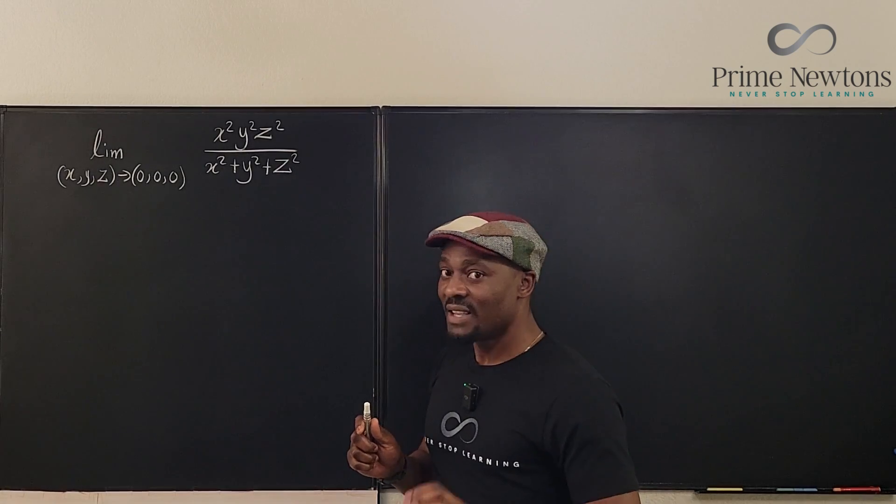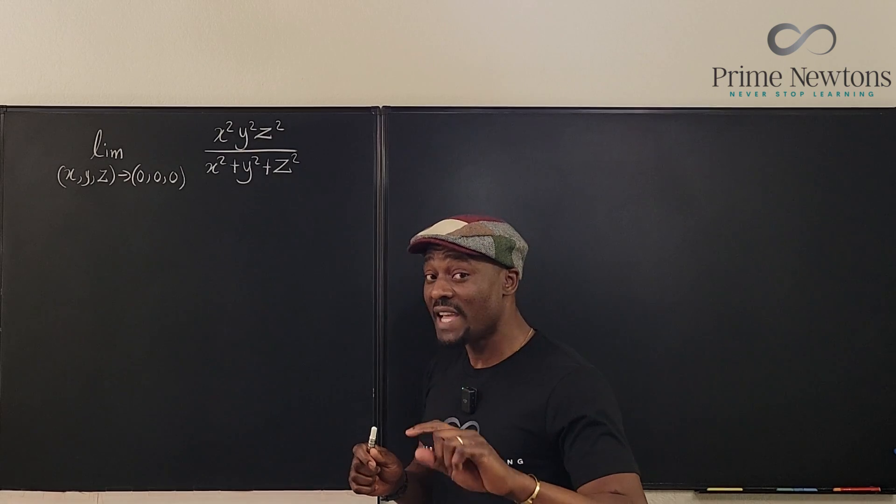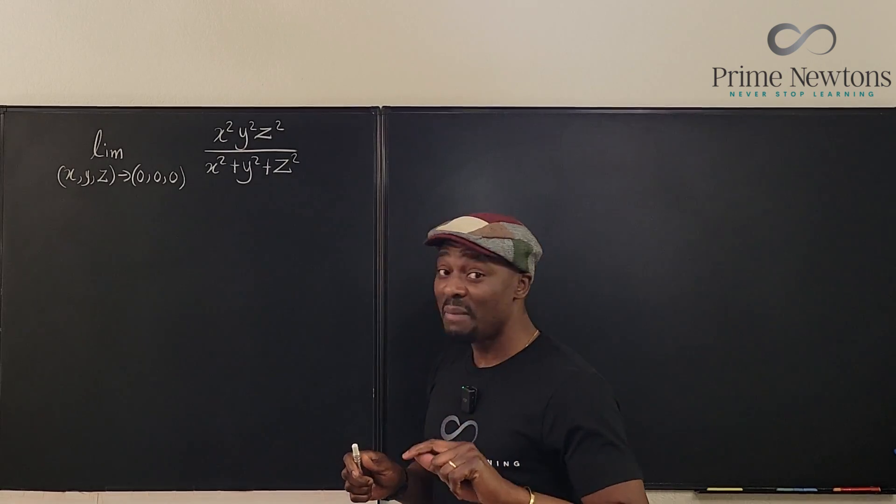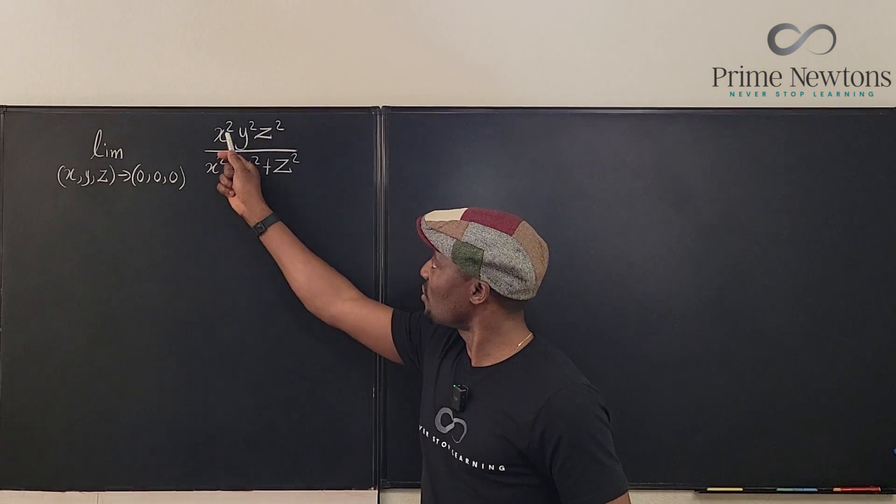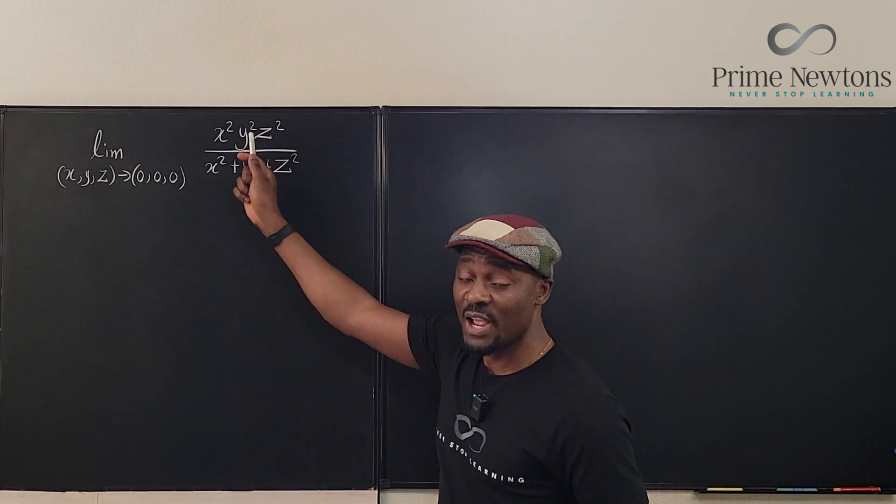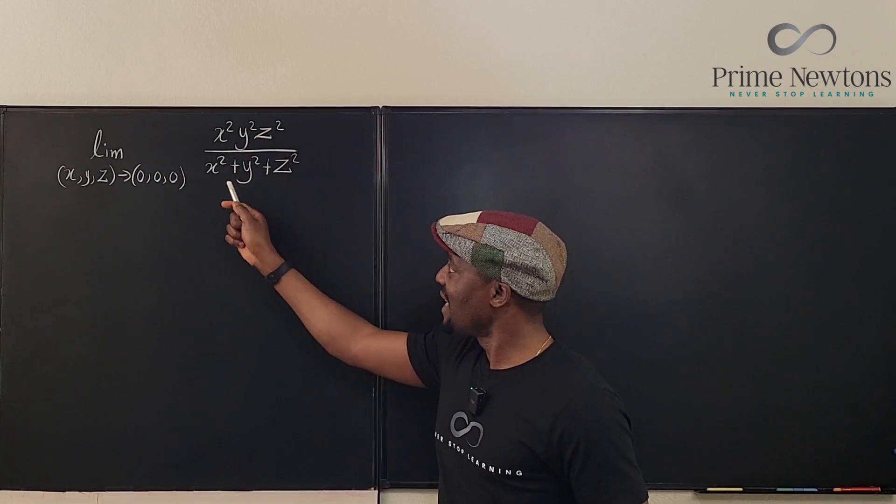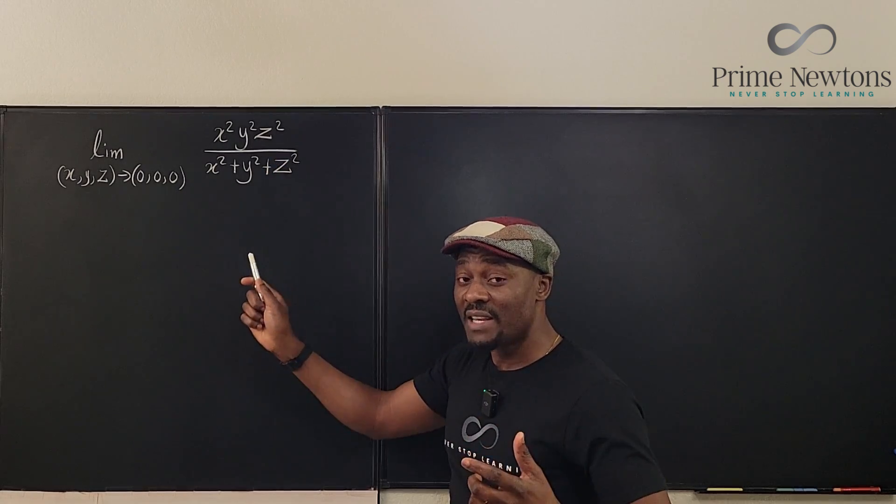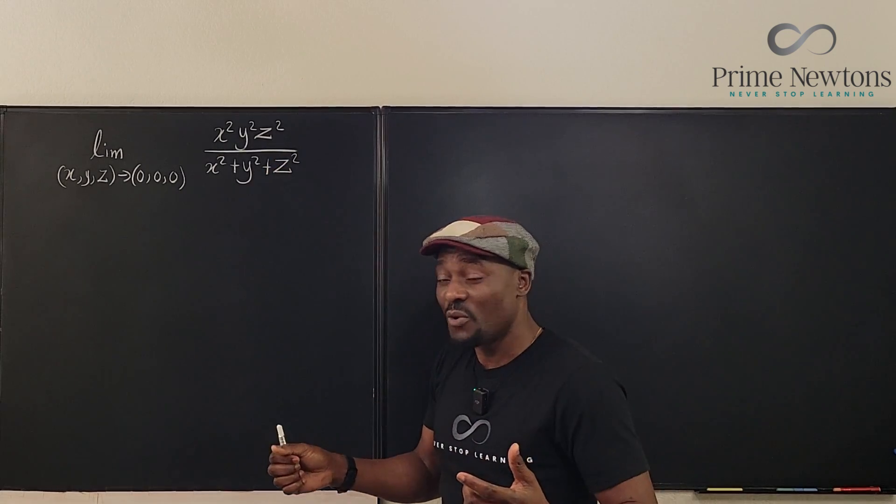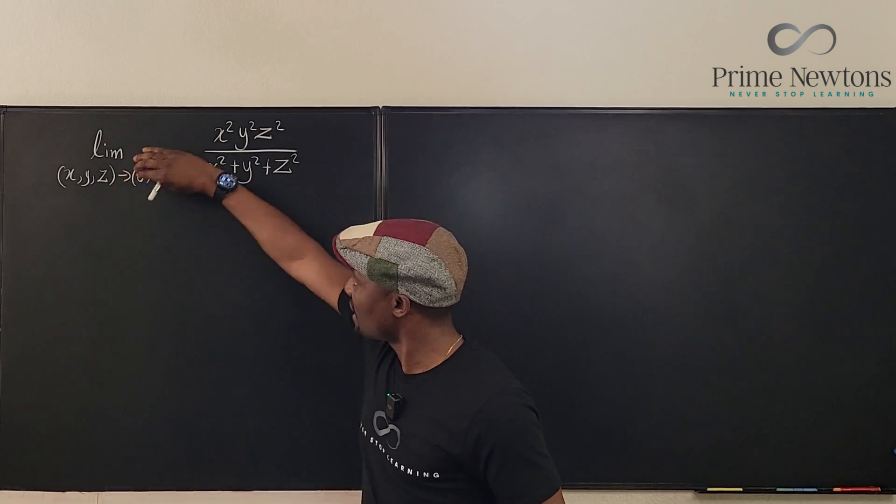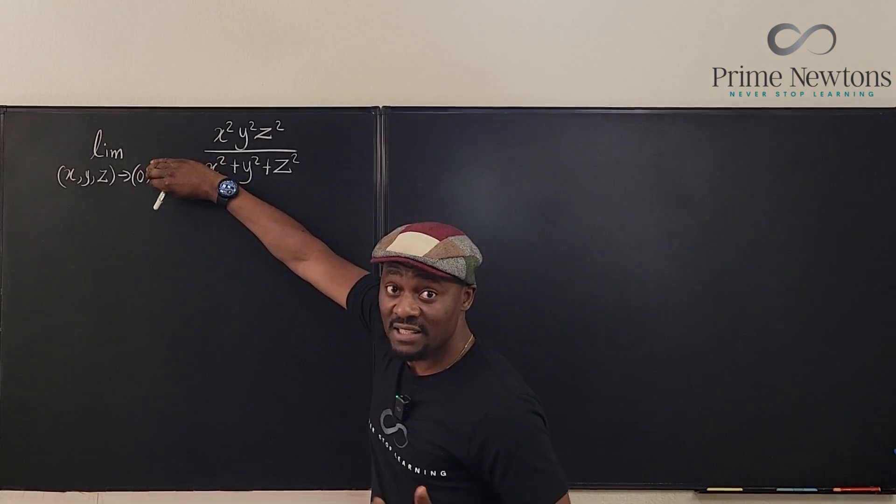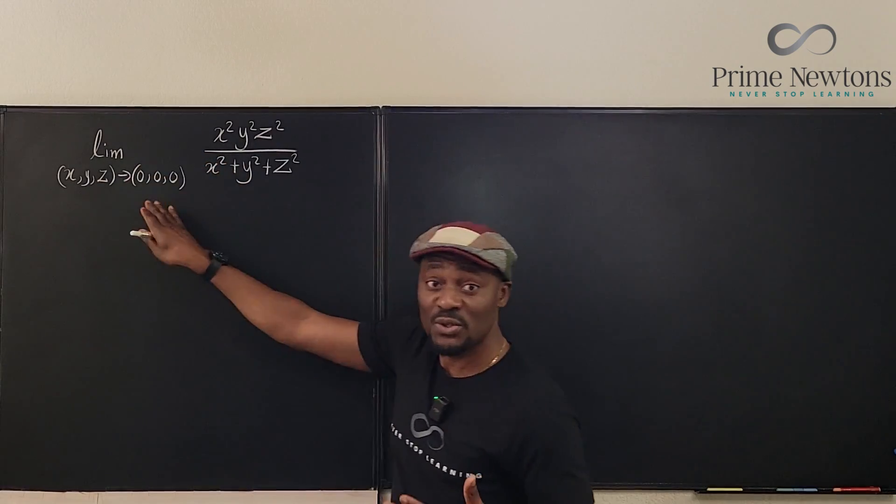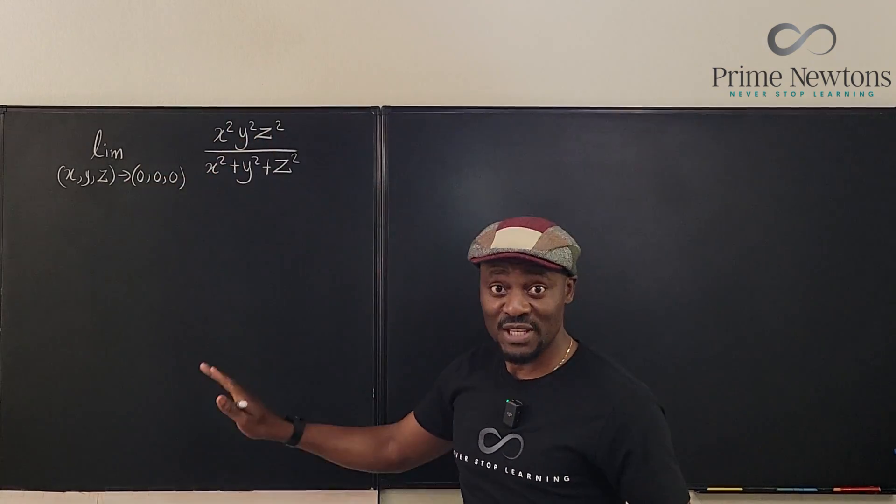So I'm going to replace x. If you replace y and z with x, what happens is on top here you're going to have x squared times x squared times x squared. So you have x to the sixth. Down here you're going to have three times x squared. By the time you divide you're going to end up with a limit of zero because the only thing you're going to have is just x. You've already said x is everything else so as x goes to zero this is going to go to zero.